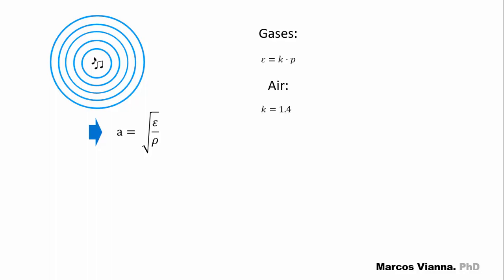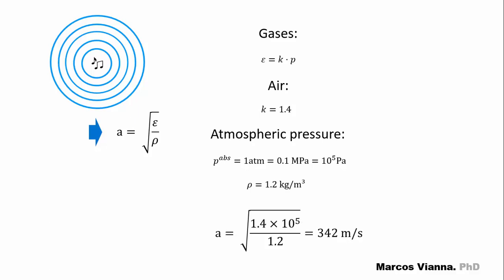Under adiabatic conditions, the K value for the atmospheric air and, in general, for diatomic gases is equal to 1.4. Let's assume that the absolute atmospheric pressure is equal to 10 to 5 Pa and the specific mass of the air is 1.2 kg per cubic meter. Substituting the values, we find 342 meters per second. This is the value that we usually adopt in our professional practice.